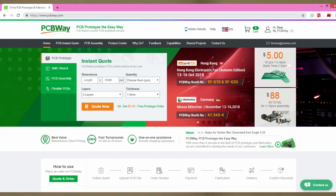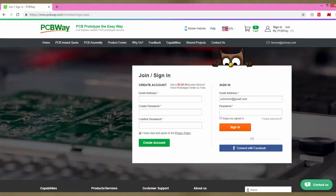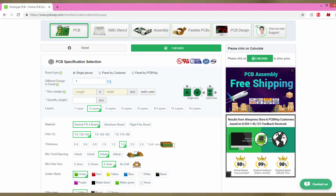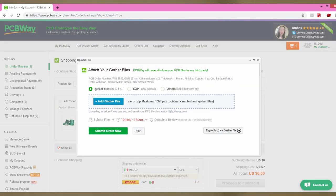Now we go to PCBWay's homepage and create an account. Then you will follow the indicated steps to order your PCBs. Put all the specifications of your PCB and then upload your Gerber file.